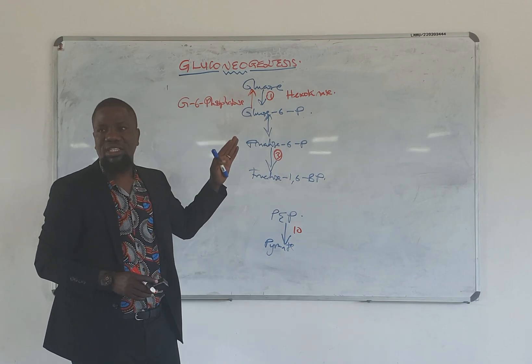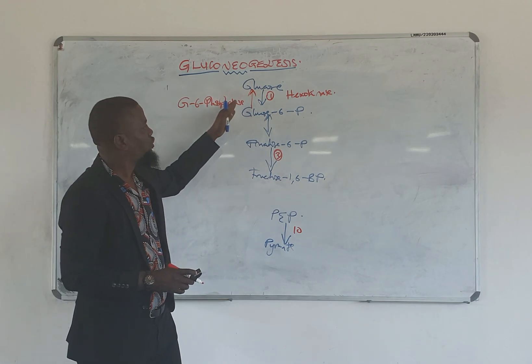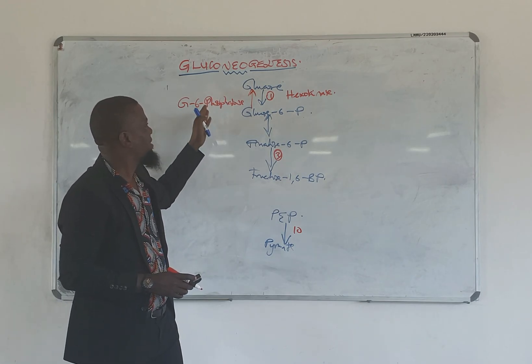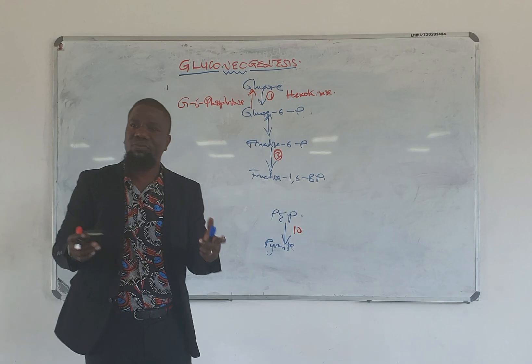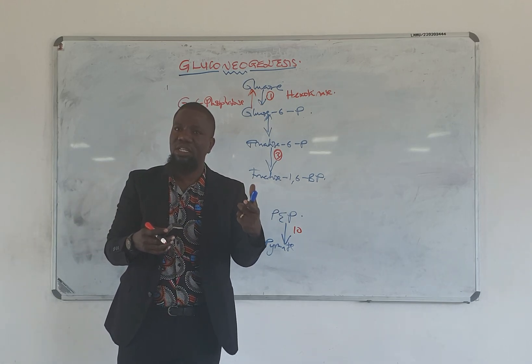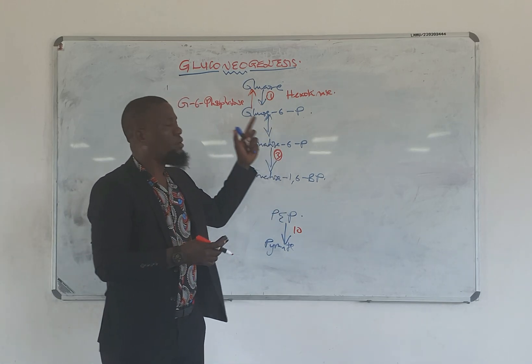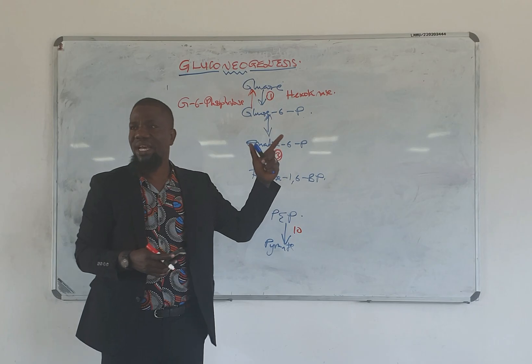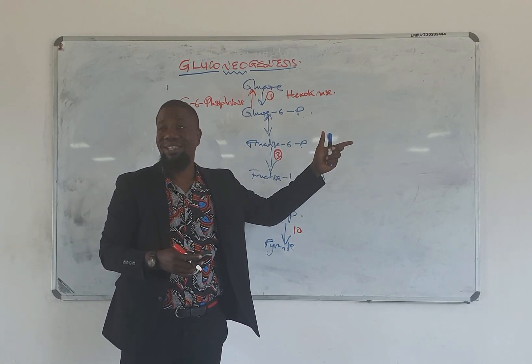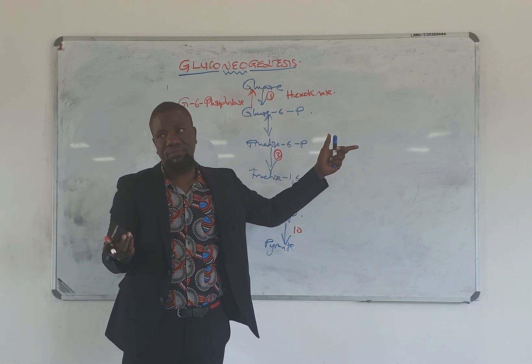For gluconeogenesis, to produce free glucose, you will actually have the enzyme glucose-6-phosphatase — the same enzyme found in the endoplasmic reticulum of the hepatocytes and proximal tubular cells in the kidney.